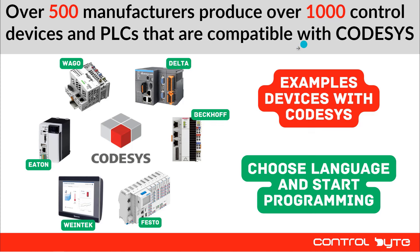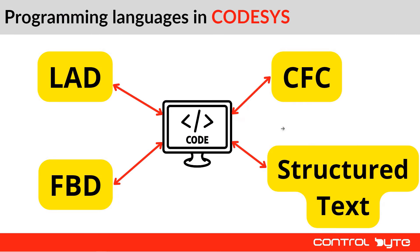Compatible devices include WAGO, Delta, Beckhoff, Festo, Vintech, Eton, and many more manufacturers. Your task is to choose a programming language and start programming. In Codesys you can find graphical languages like ladder, which is similar to an electrical diagram, FBD (function block diagram), and CFC (continuous function chart), which is really popular for building automation. You also have structured text, which is a text-based language.